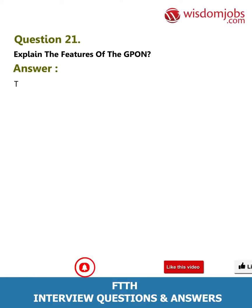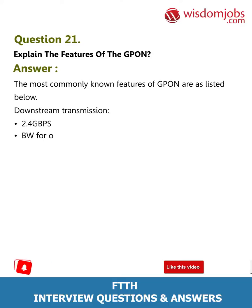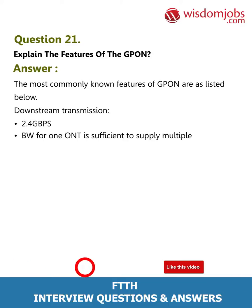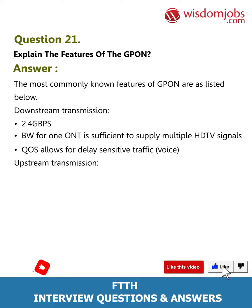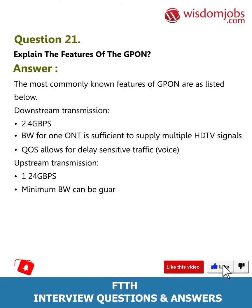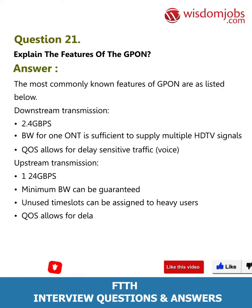Answer: The most commonly known features of GPON are listed below. Downstream transmission: 2.4 Gbps bandwidth for one ONT is sufficient to supply multiple HDTV signals; QoS allows for delay-sensitive traffic such as voice. Upstream transmission: 1.24 Gbps; minimum bandwidth can be guaranteed; unused time slots can be assigned to heavy users; QoS allows for delay-sensitive traffic such as voice.